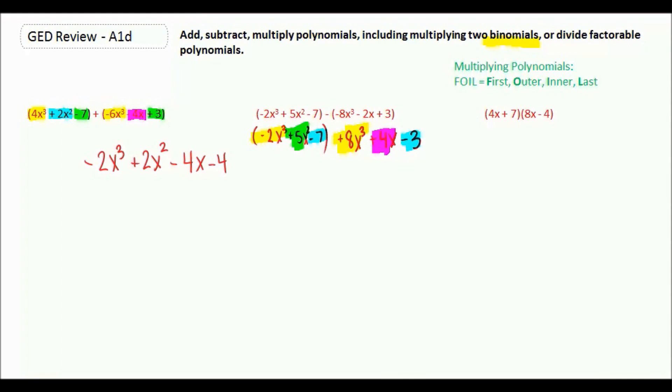A negative 2x cubed plus 8x cubed is 6x cubed. Once again, nothing goes with our x squared. Nothing to match up with our plain x. And then negative 7 minus 3 is negative 10.